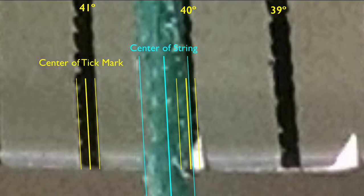Now we don't want six lines. These are just guidelines. We really want the center points. So let's mark the centers of the tick marks and the string. And now we don't need the guidelines anymore.